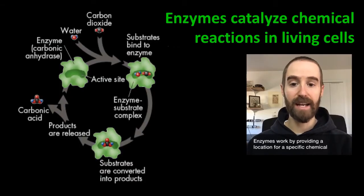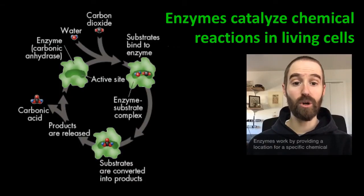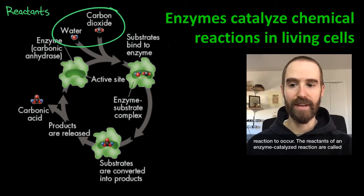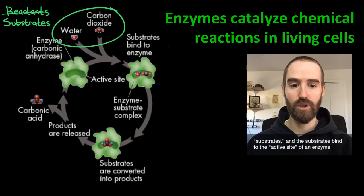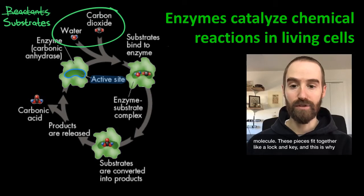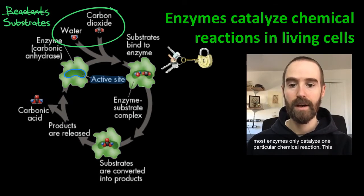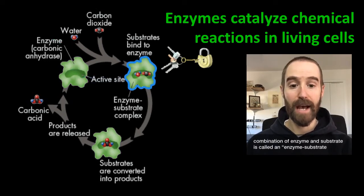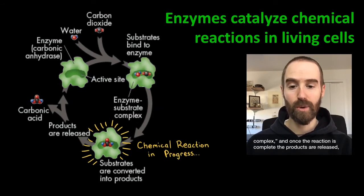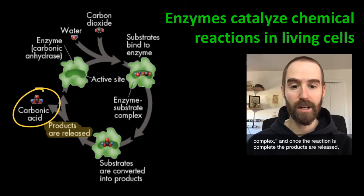Enzymes work by providing a location for a specific chemical reaction to occur. The reactants of an enzyme-catalyzed reaction are called substrates, and these substrates bind to the active site of an enzyme molecule. These pieces fit together like a lock and key, and this is why most enzymes only catalyze one particular chemical reaction. This combination of enzyme and substrates is called an enzyme-substrate complex, and once the reaction is complete, the products are released and the enzyme is ready to catalyze another reaction.